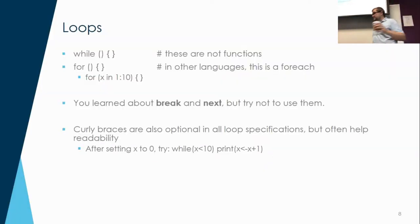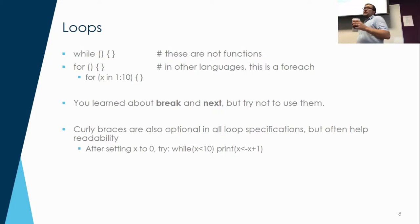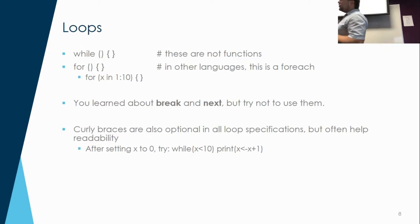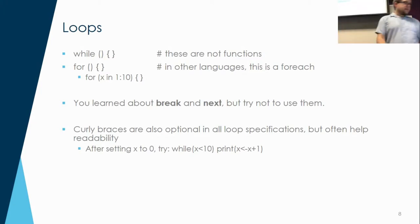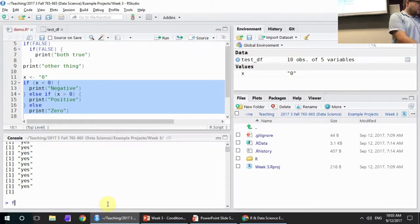For is kind of a weird one. For is also a looping construct. In most languages, for is called 'for each' — for is a totally different thing in most other languages. The version of for used inside R basically says: create a new variable for each value inside a vector. For example, you could say 'for i in 1 through 10, print i.' That will print the numbers 1 through 10.